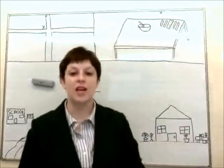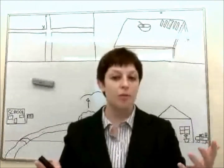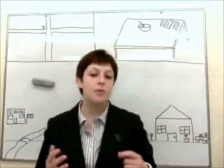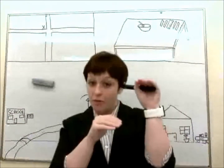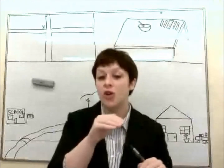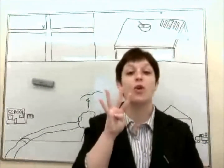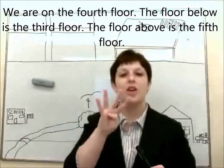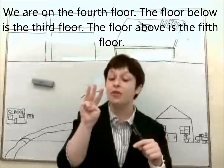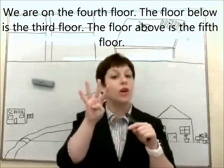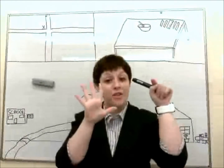Also, if you live in a building with multiple floors, like an apartment building, depending on what floor you're on, you could have people above you or below you. For example, if we are currently on the fourth floor, the floor below us is the third floor. The floor above us is the fifth floor.